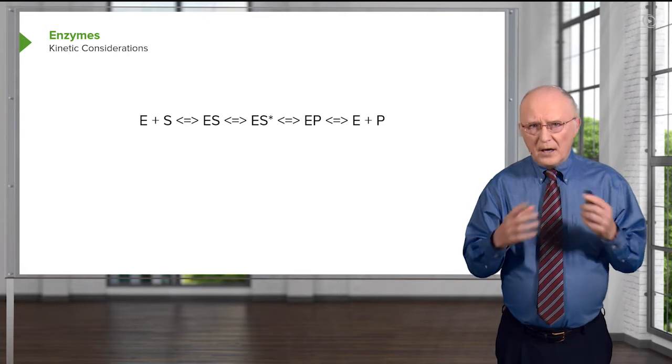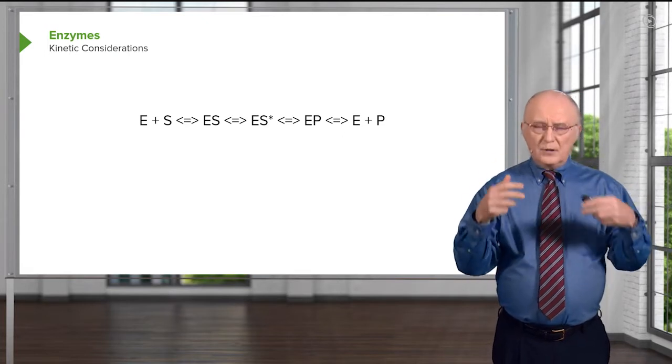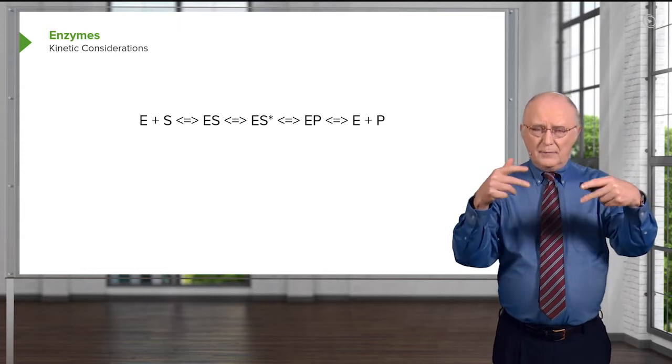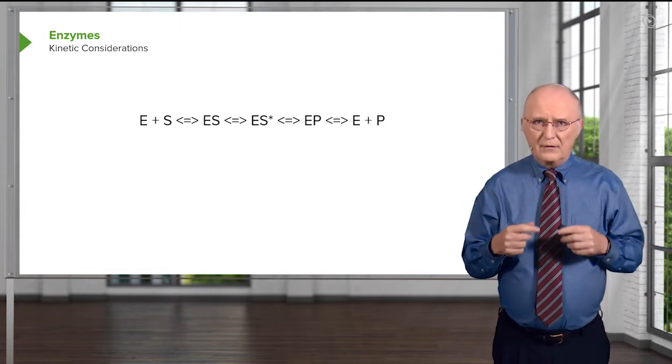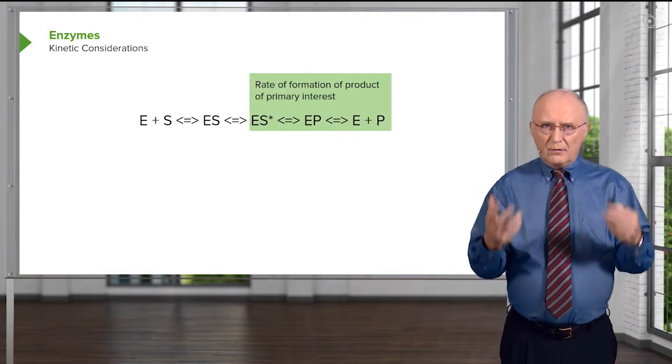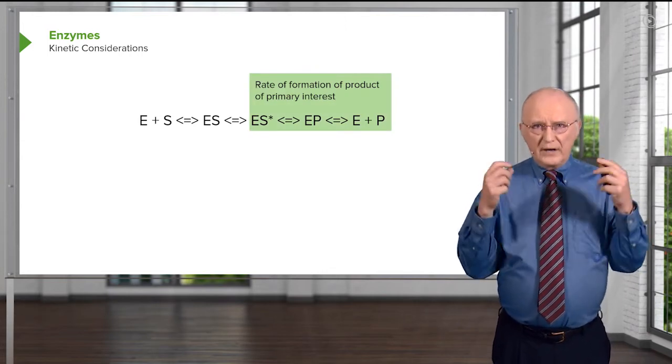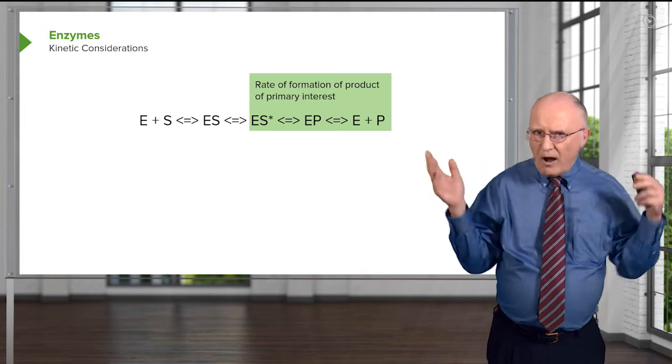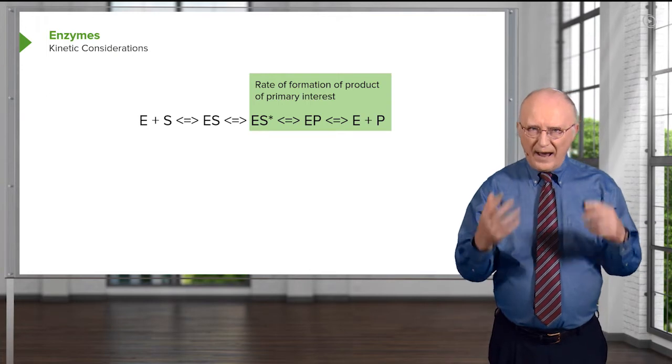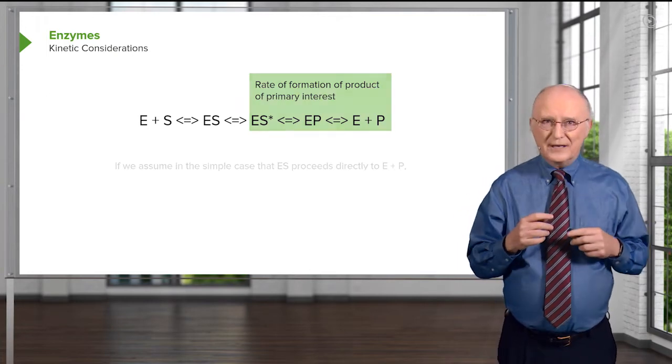Now I come back to this because we are going to need to consider some things about the kinetic parameters, that is the speed parameters of the reactions that we're going to study. This rate of formation of product is really what we're interested in. When we talk about how fast an enzyme can make a reaction occur, this is the guts of what we're after. We want to know how fast is the enzyme able to do this.